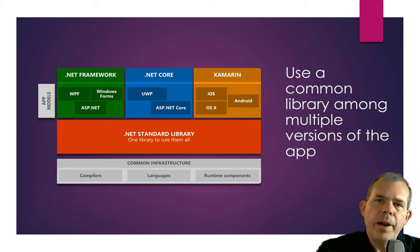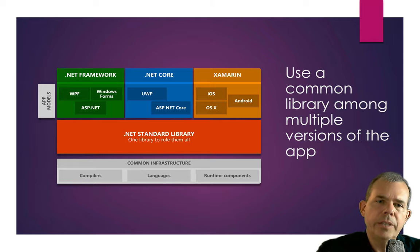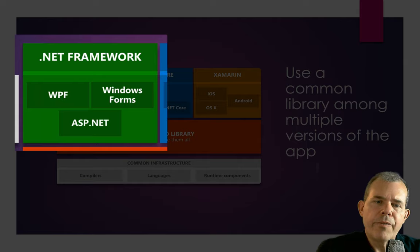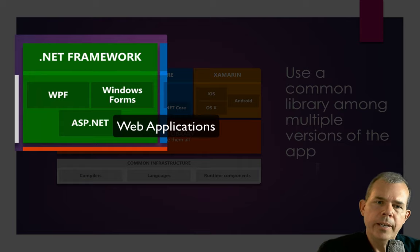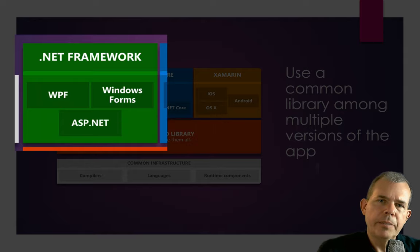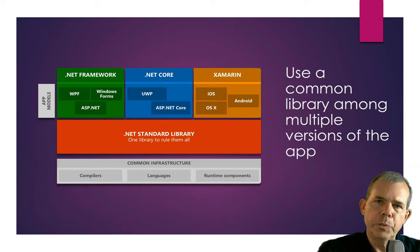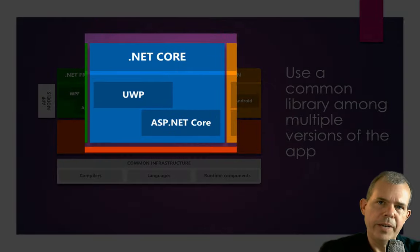Now here's another practical reason why you would want to create a class library. This diagram shows that in the .NET world, you can use your code in multiple types of applications. The top-left corner is called the .NET Framework, and you can see there are different kinds of apps: WPF, Windows Forms, and ASP.NET. WPF and Windows Forms are desktop applications; ASP.NET is used to make web applications. The same set of code can supply all those types of applications with data. The blue section is the newer version called .NET Core, which provides web apps and desktop apps in a newer version.